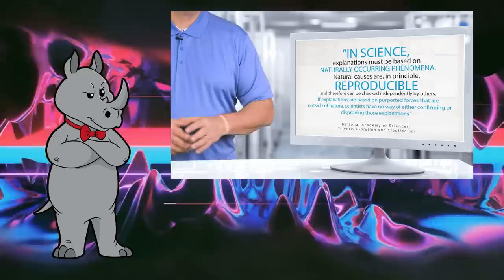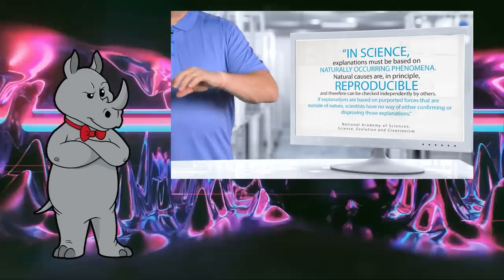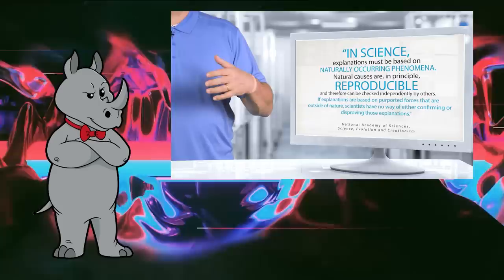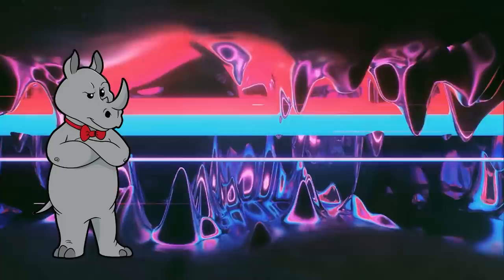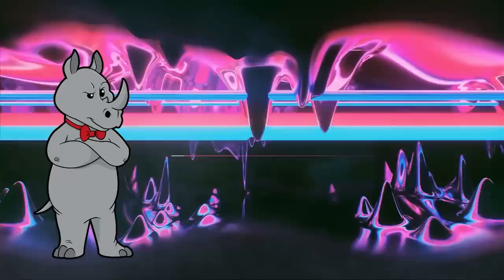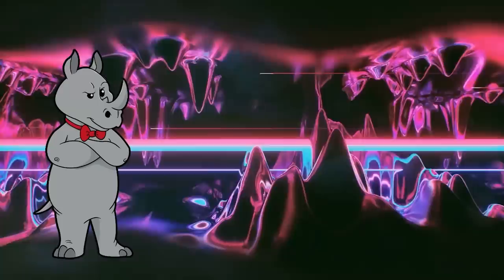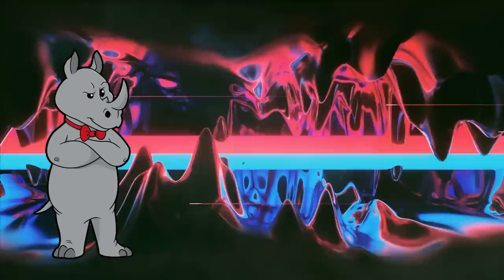Here's one more: in science, explanations must be based on naturally occurring phenomena. Natural causes are, in principle, reproducible and therefore can be checked independently by others. If explanations are based upon purported forces outside of nature, scientists have no way of either confirming or disproving those explanations. Exactly. If something is the result of a supernatural power like a god, then that thing is based on that god's particular whims. Test it a second time and the god might not feel like performing in the same way. So if I hypothetically grant the existence of supernatural forces, they still don't fall into the purview of science because of their untestable and non-reproducible qualities.